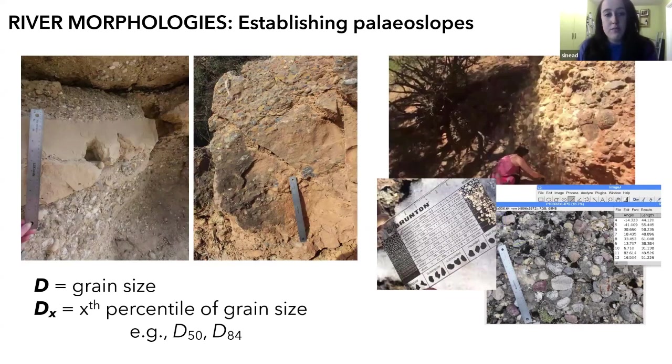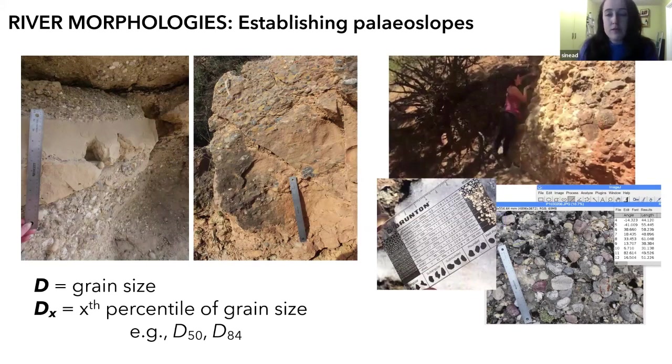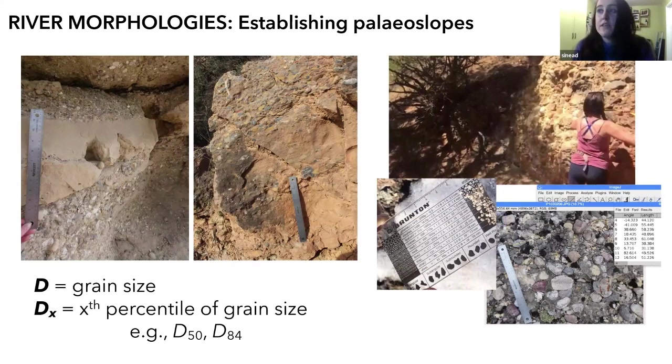Once we've got our flow depths, we can go ahead and figure out things like paleoslopes. And to do this, we then need grain size of the bed material.